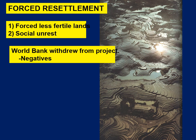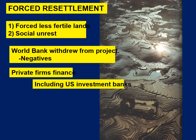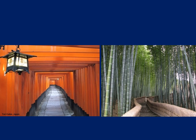There were many protests over the forced removal of these individuals. The World Bank, also known as the IMF, was involved in the project, but eventually withdrew because of so many negatives, especially the corruption. Instead, private firms financed the dam, including firms from the United States, because it was in our interest for China to increase its industrial development — after all, a lot of our goods come from China.